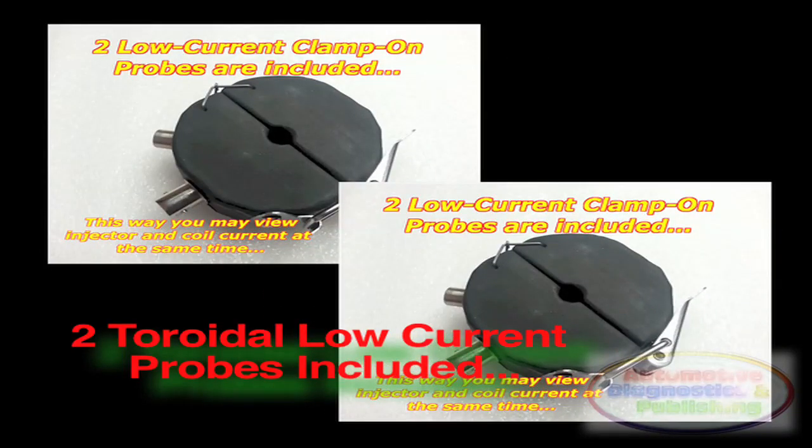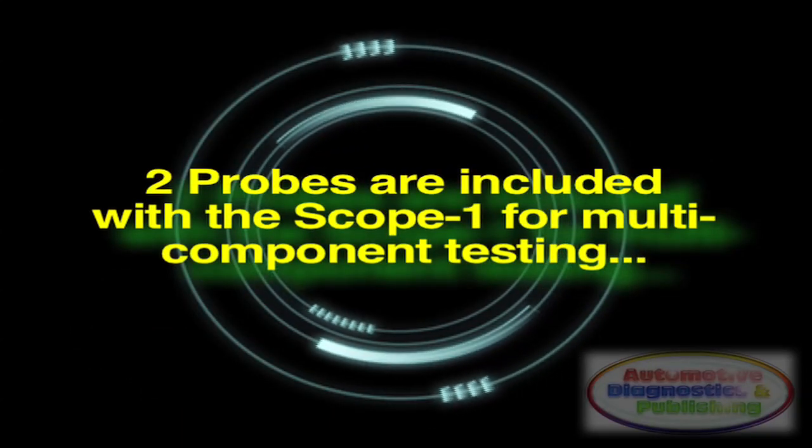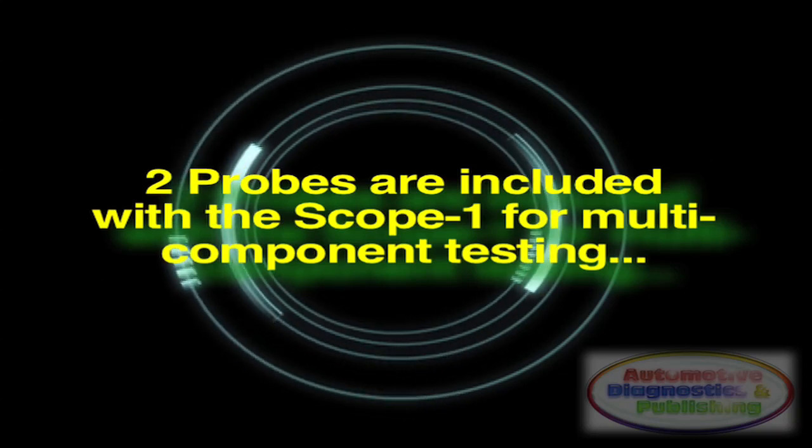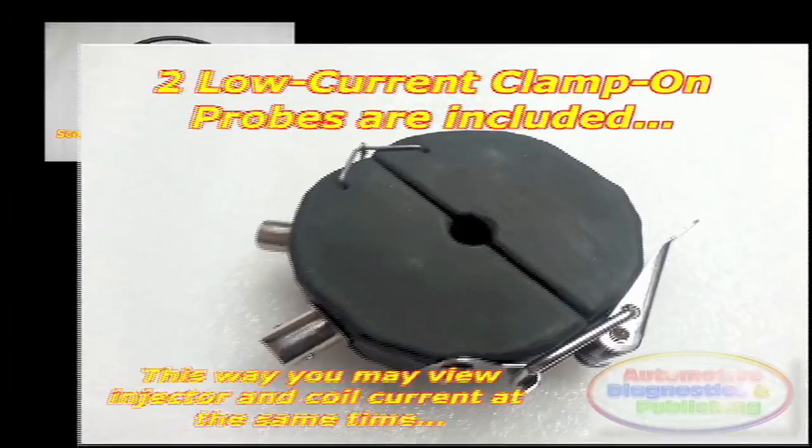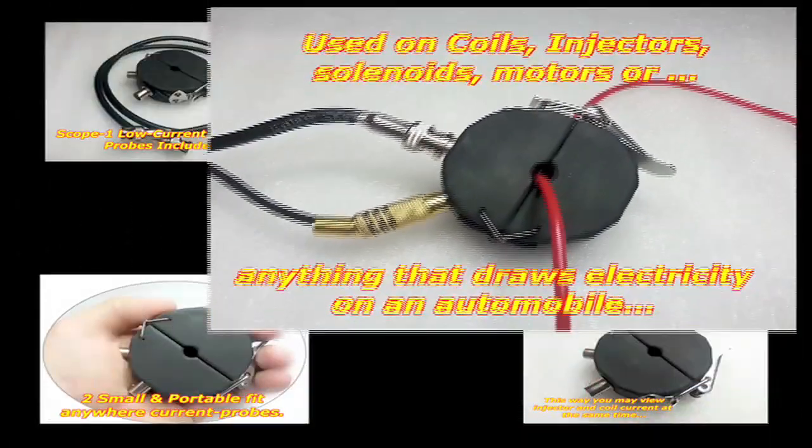Why is that? Because at some point in any technician's life, you will need to see both the injector and the ignition coil current waveforms at the same time. This is how the Scope 1 system is structured and developed by automotive technicians, coupled with the Scope 1 automated features that translate the waveform for you.